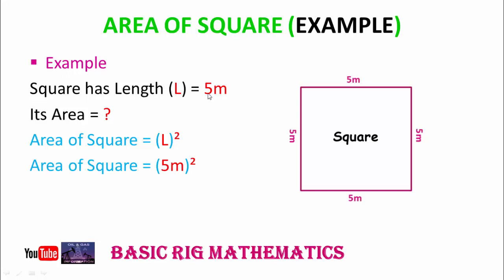We simply replace the capital L with five. So area of square is equal to 25 meter squared. This is the total area of the square. I hope you understand how to calculate the area of square with this example.